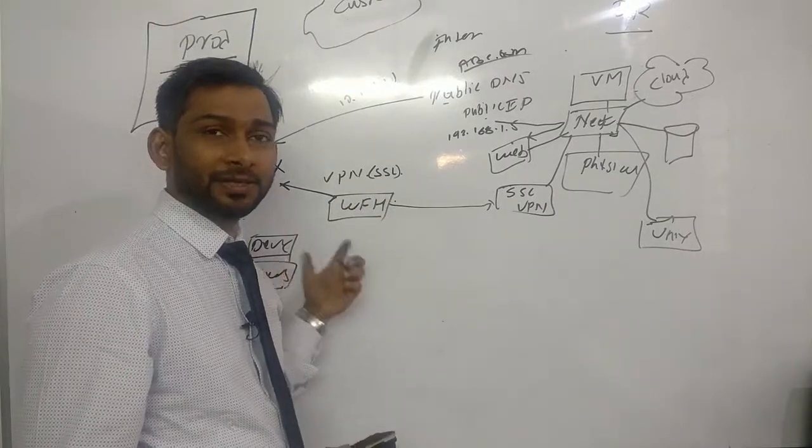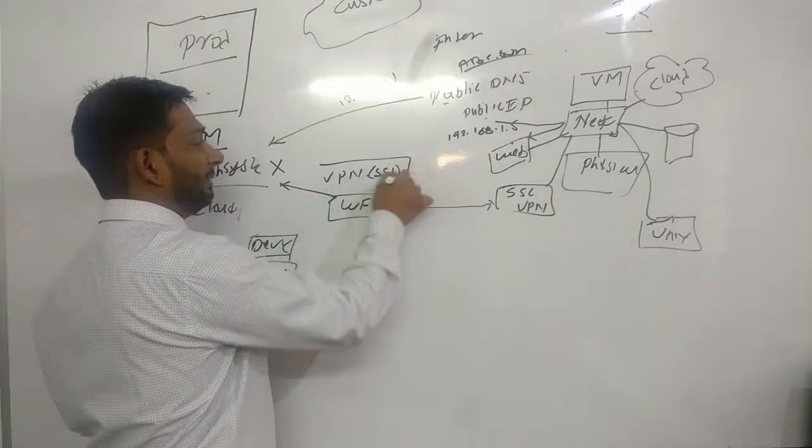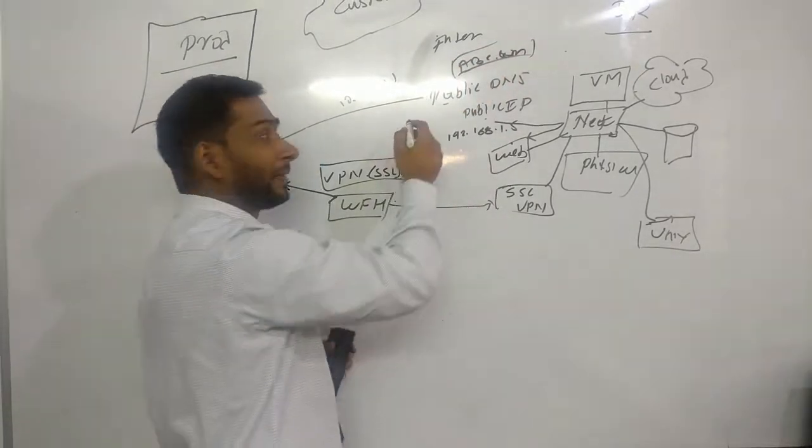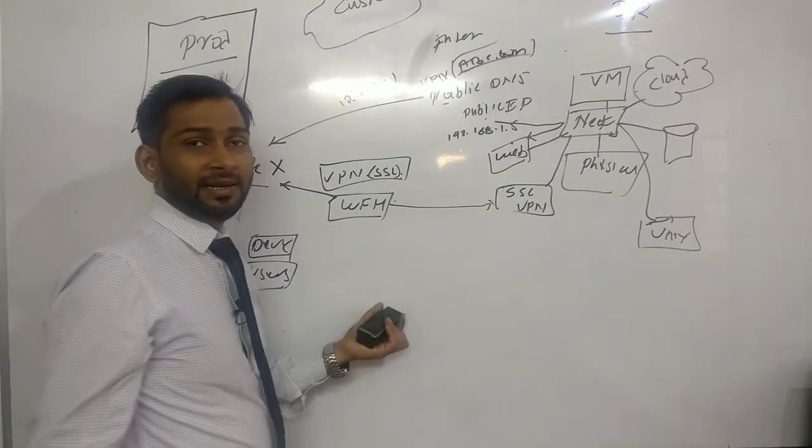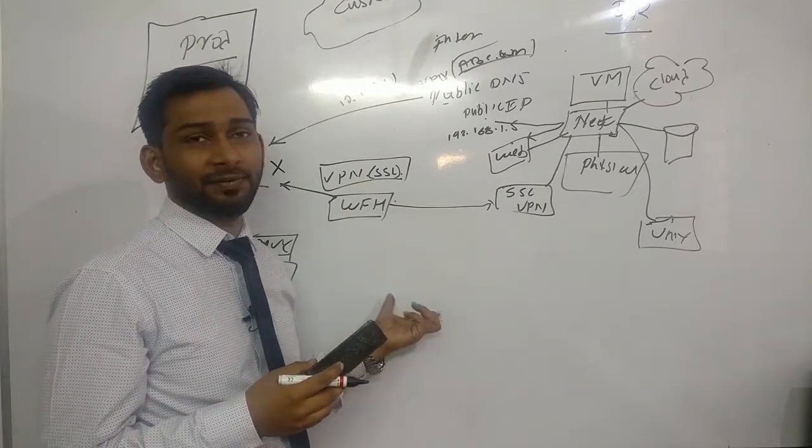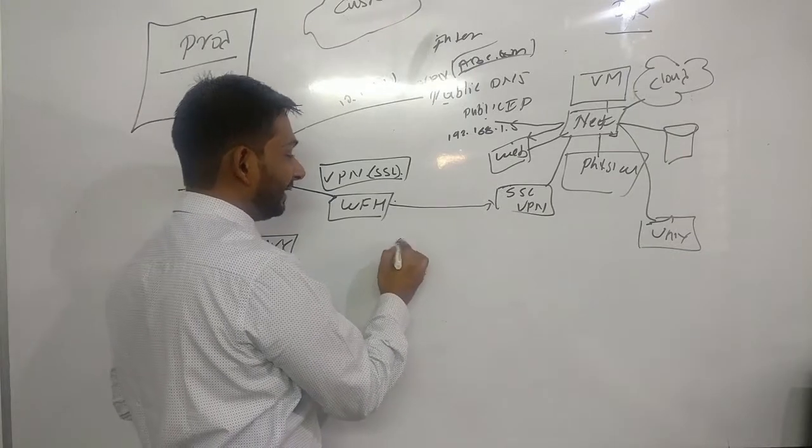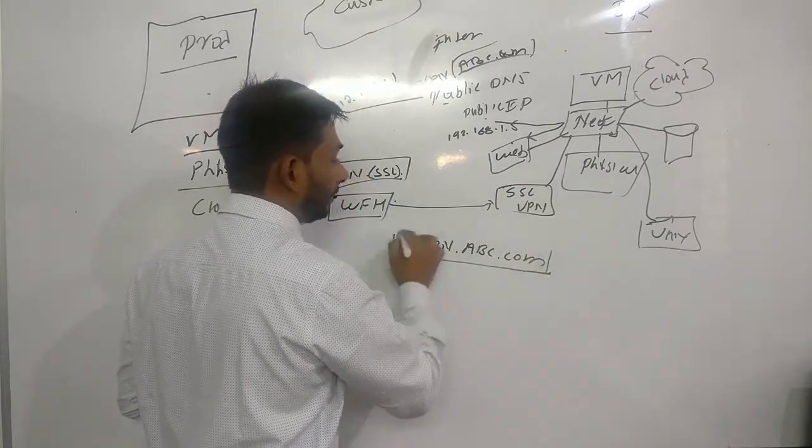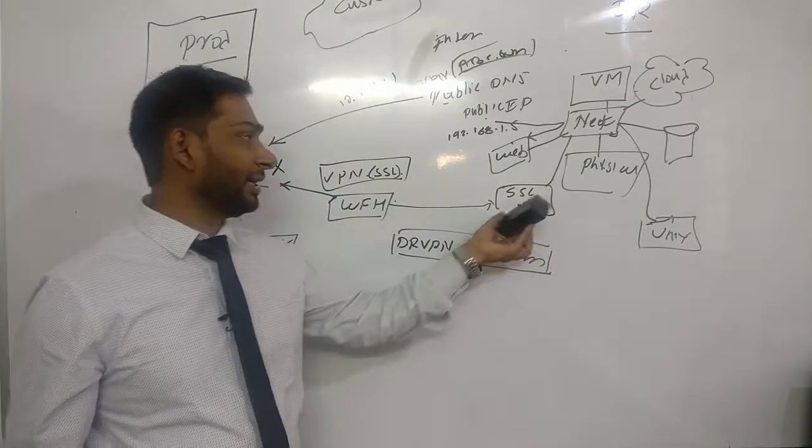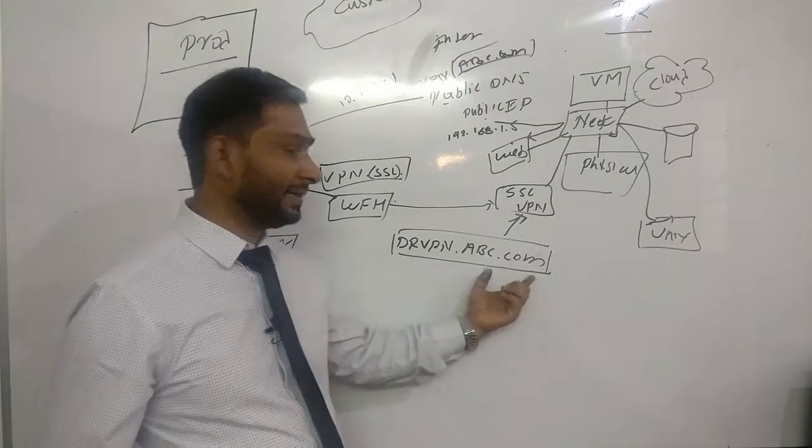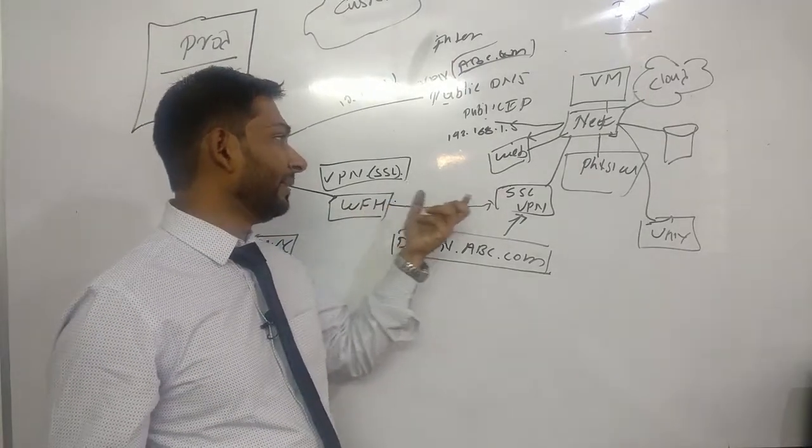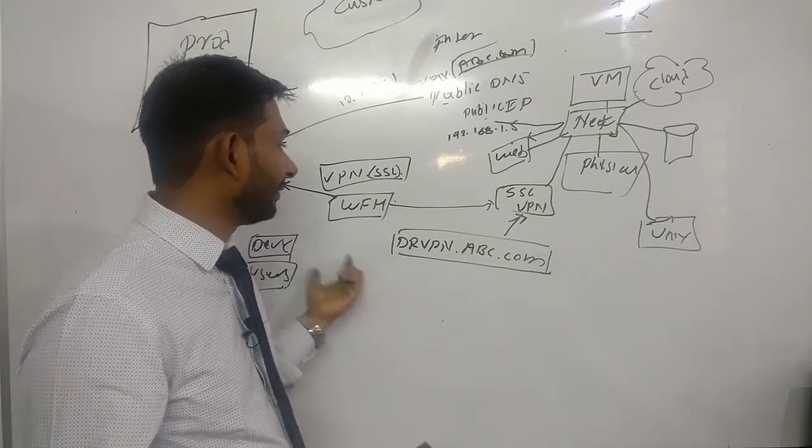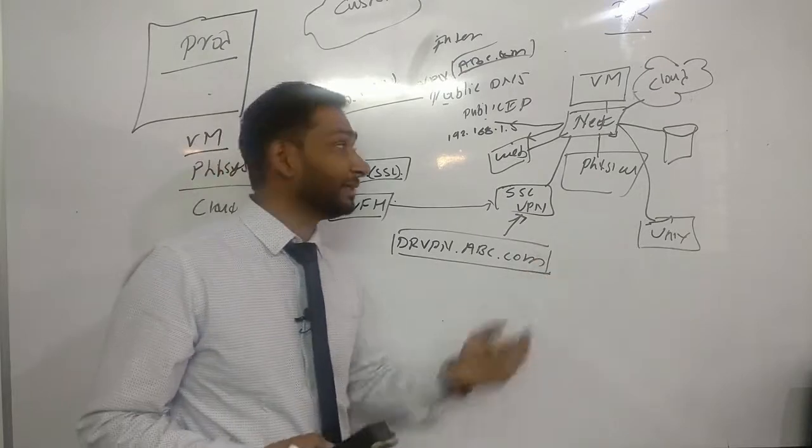There are many companies or organizations - this was my site abc.com and to access the VPN at production they used to access VPN.abc.com. A very easy way to do this is set up one more A record which is DRVPN.abc.com that will always be pointing to your SSL VPN public IP address because you already purchased that. Whenever users try to access this, they can use the DR VPN. There will be official communication sent to everyone via BCP that you need to access the DR environment and they can follow this process to connect to the DR VPN.